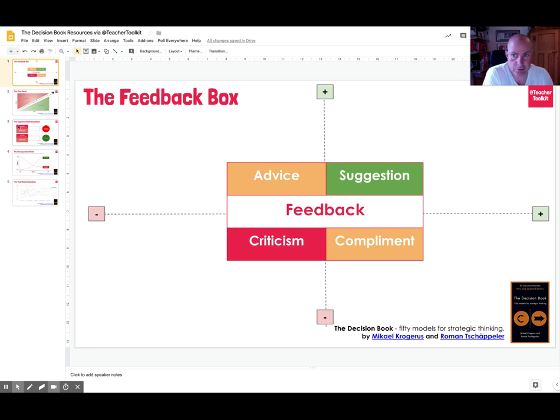Hello everyone, Ross at Teacher Toolkit. I've got five ideas for you here. This is from a lovely little book called The Decision Book, which I've had for about a year. There's 50 ideas inside and they're really good ideas for thinking strategically. So really good for middle leaders, want to be school leaders or people who might work with schools.